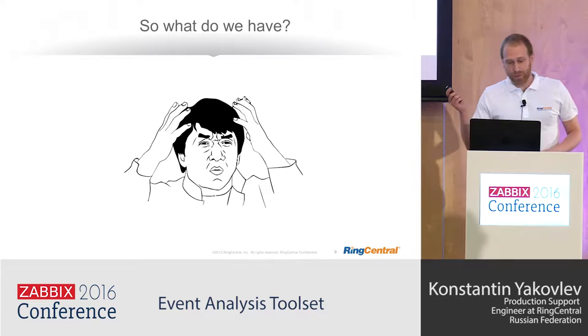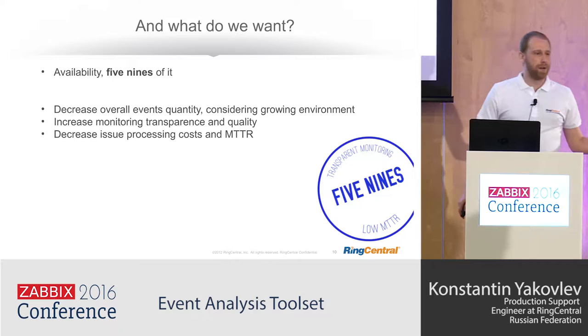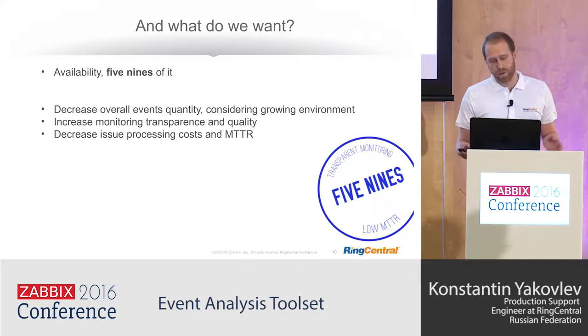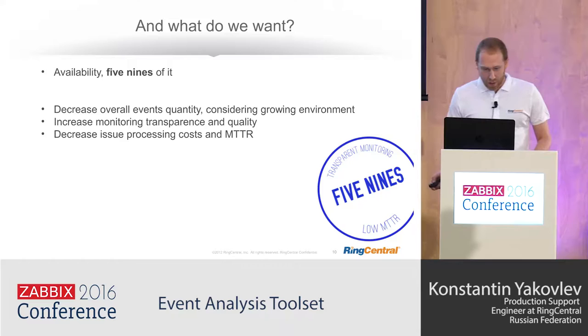What do our bosses want? Availability — five nines, to be precise. Pretty challenging goal. It requires a focus on different parts of the development and operation pipeline. Therefore, entering the project we focused on the following: first, decrease overall event quantity considering a growing environment; second, increase monitoring quality and accuracy; and third, decrease issue processing costs — and by all of this, decrease mean time to repair.